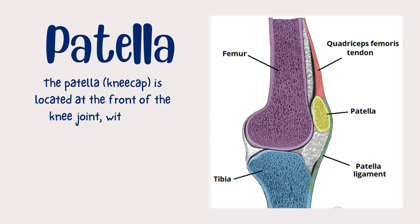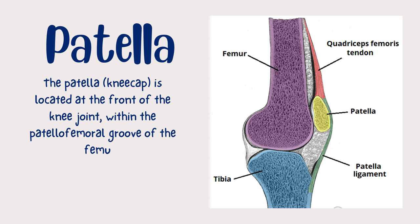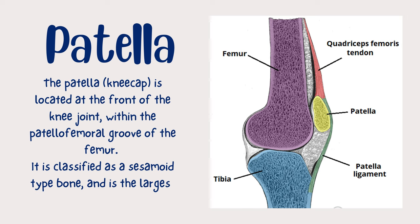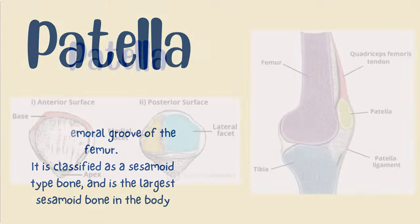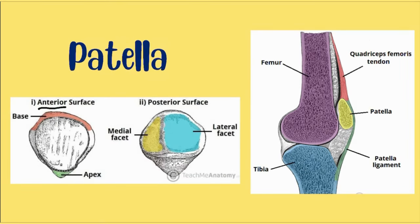Now we are going to study the patella, also known as the kneecap. It is located at the front of the knee joint within the patellofemoral groove of the femur. It is classified as a sesamoid bone and is the largest sesamoid bone in the body. The patella has a triangular shape with anterior and posterior surfaces.